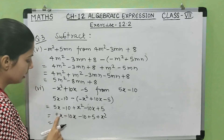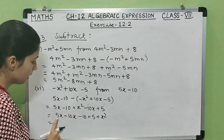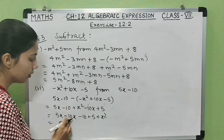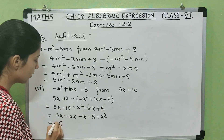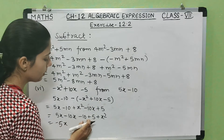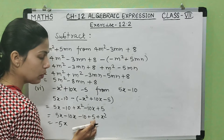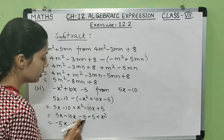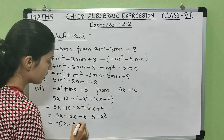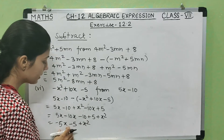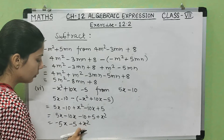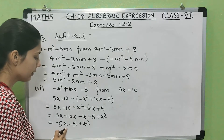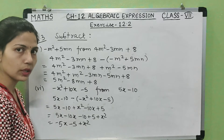For 5x minus 10x: one positive, one negative — subtract — 10 minus 5 is 5, sign goes with the greater number 10 which is negative, so minus 5x. For minus 10 plus 5: one negative, one positive — subtract — 10 minus 5 is 5, sign goes with greater number 10 which is negative, so minus 5. Plus x² remains. The three unlike terms give the final answer: minus 5x minus 5 plus x².